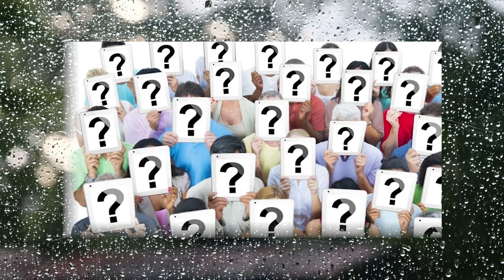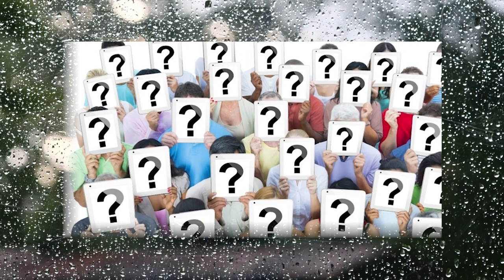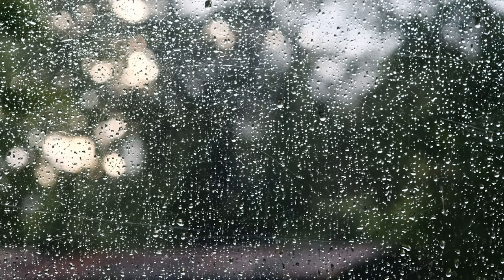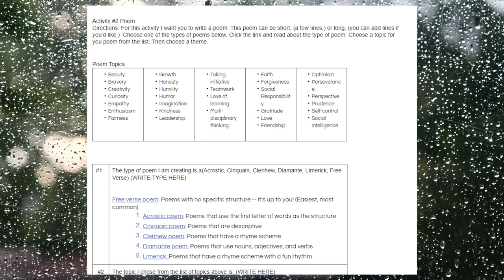And that ends our poetry reading for today. Now, I want you to make sure to go back, and if there were any poems you couldn't identify the theme for, think a little bit harder on the topic and what the author might have been trying to say. Your second activity for today is going to be to write a poem. I want you to choose a topic, theme, and what style of poem you're going to write.